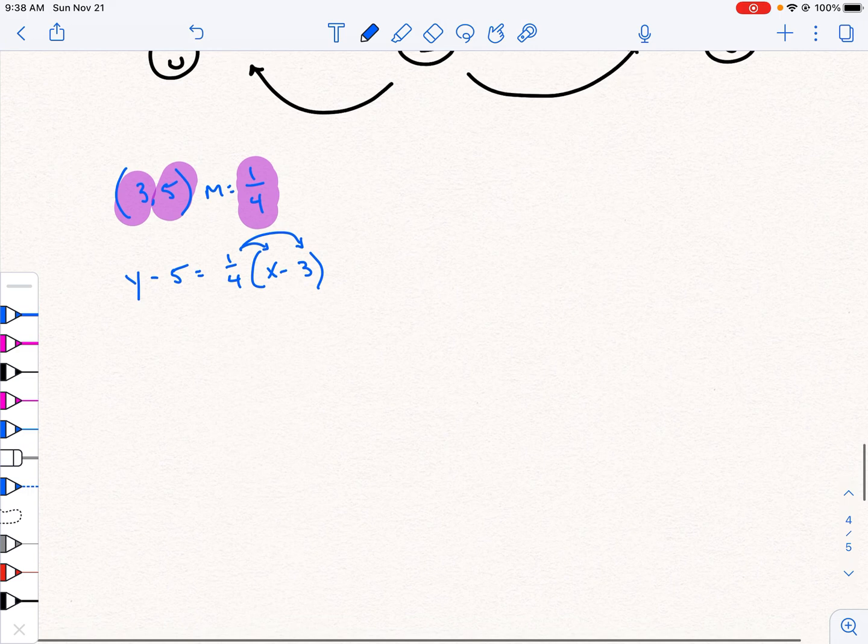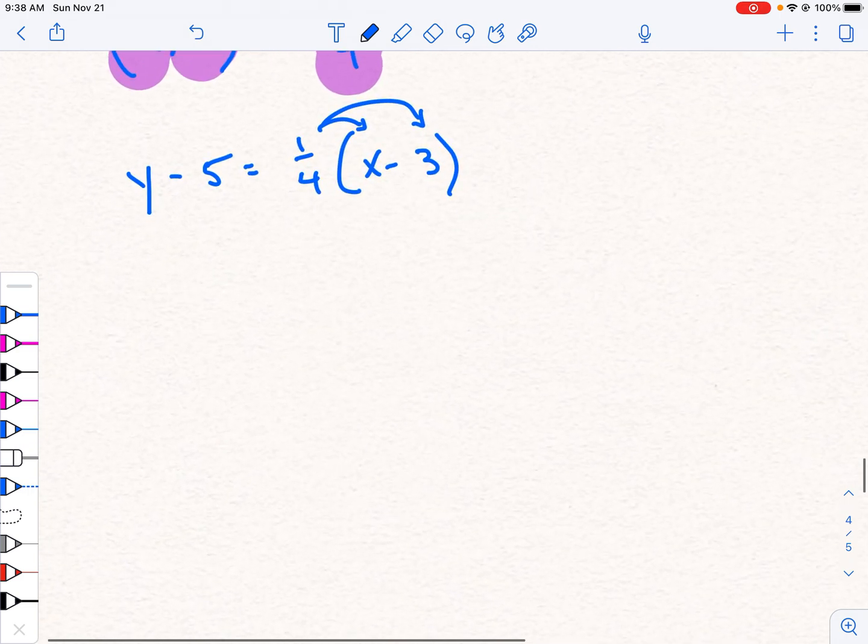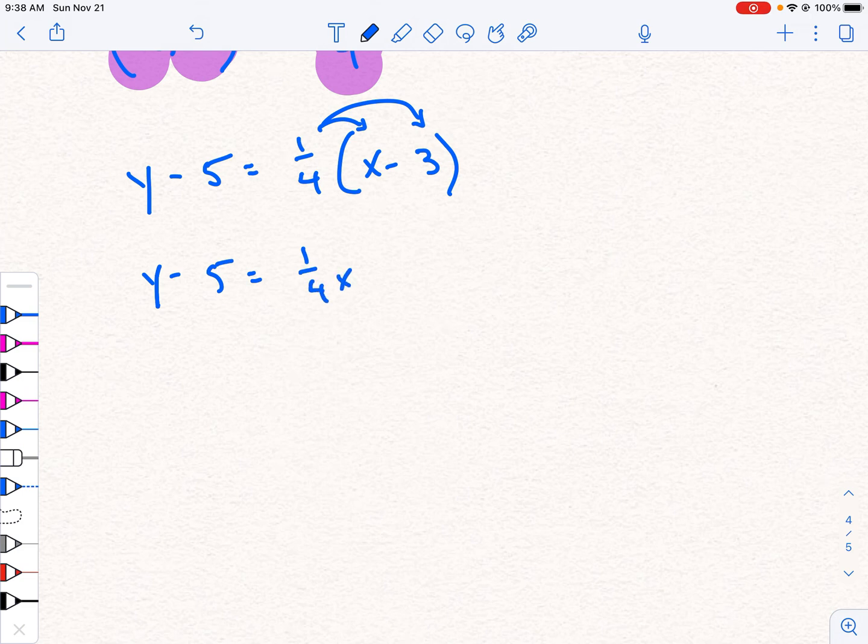So we're going to automatically kind of try to get rid of the parentheses. And I'm going to do that using distribution. 1 fourth x minus 3 fourths. All right.